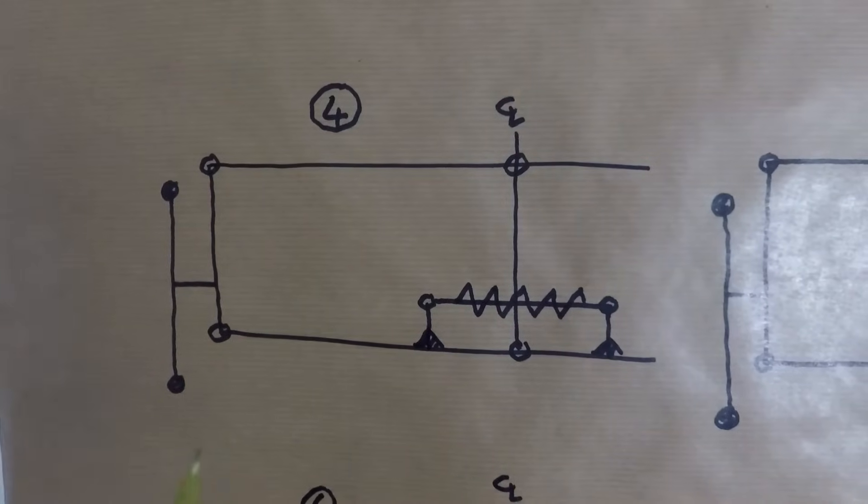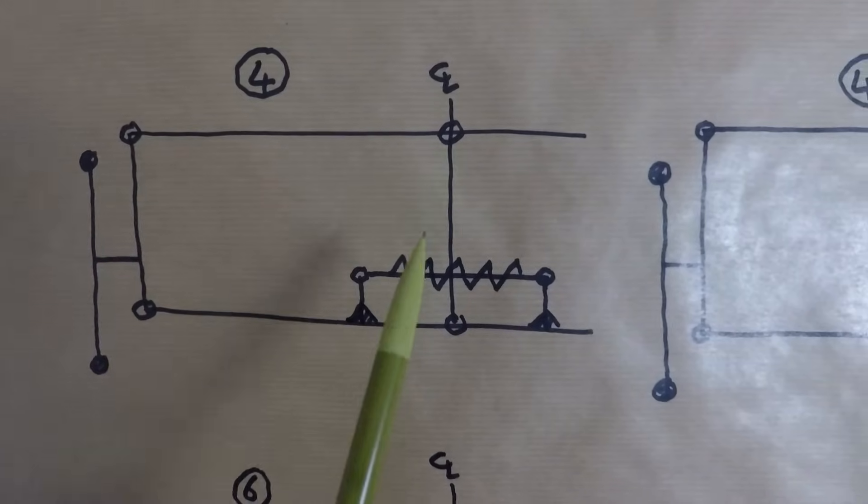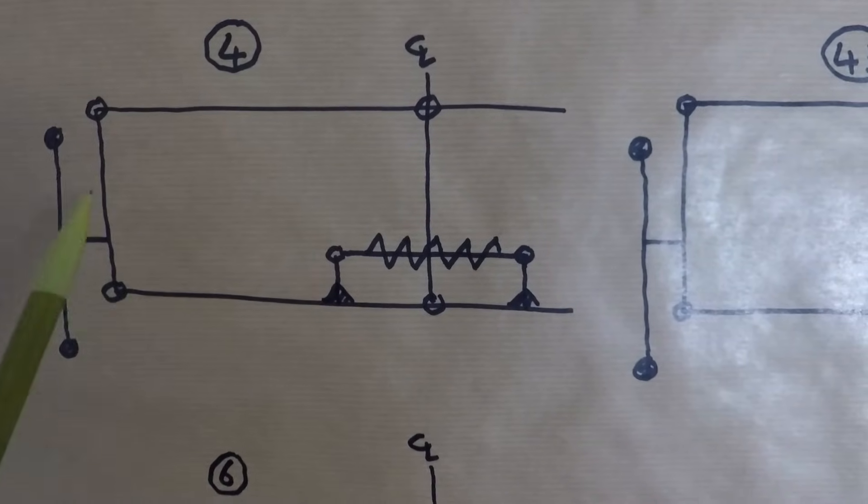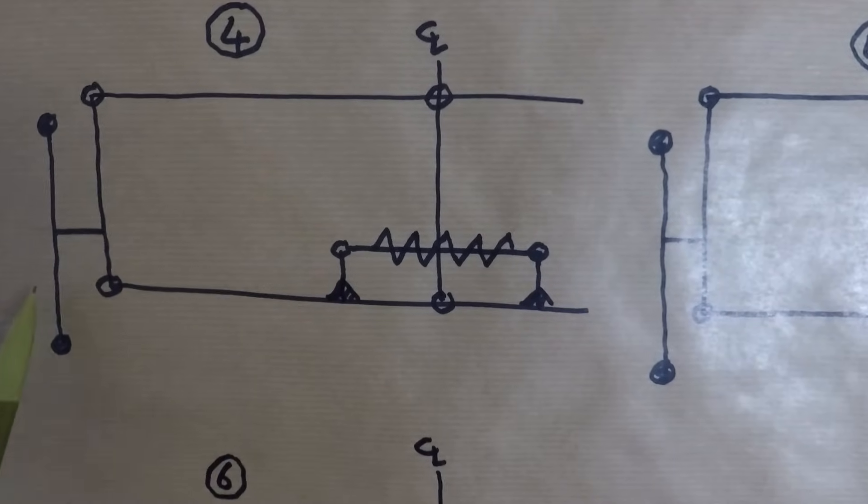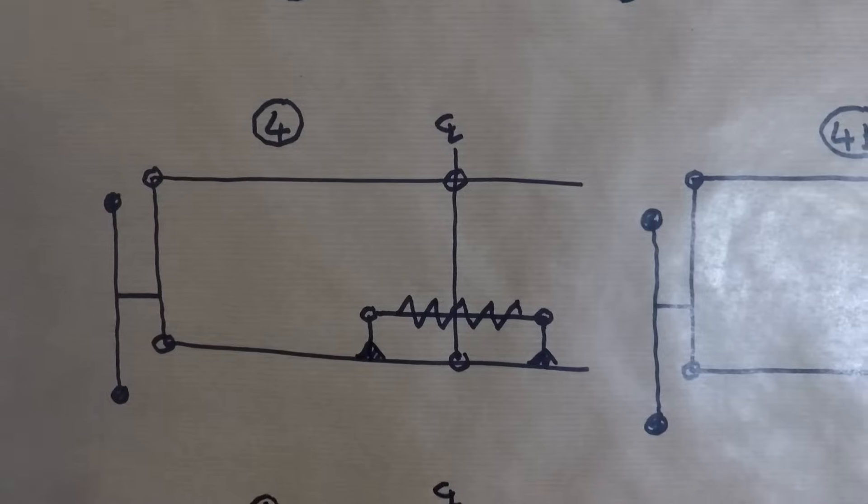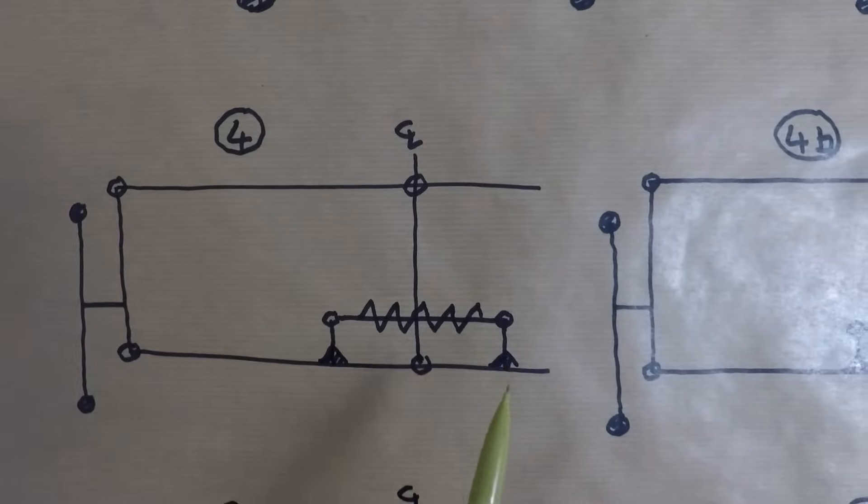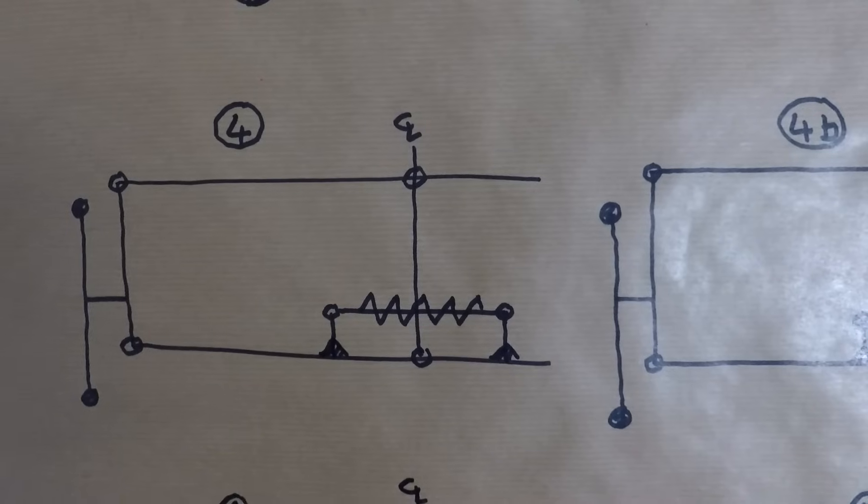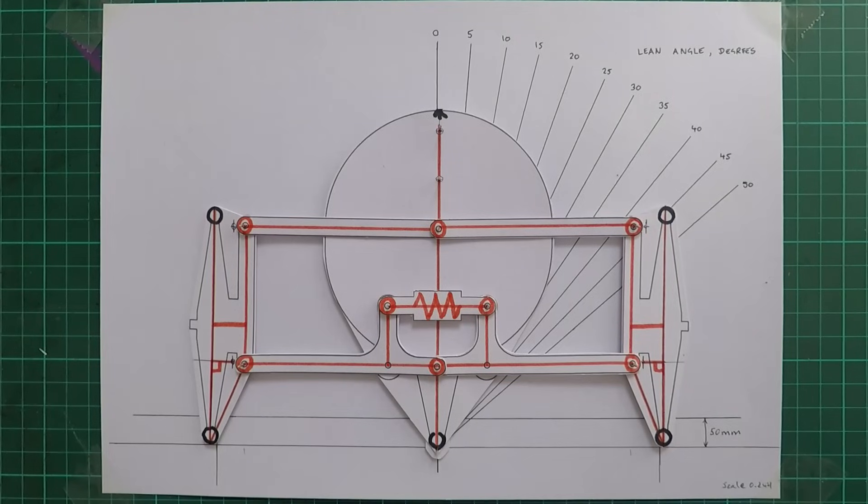The first option looks like this. It retains the two parallel arms pivoted on the centre line but moves the outer pivots inwards to clear the wheels. The pivots must be close to the wheels to maintain the ideal geometry as far as possible. I've added some suspension with a single shock and the two arms are jointed in the middle. With the suspension at the rest position the arms are in line with each other. So let's see how this set up behaves.